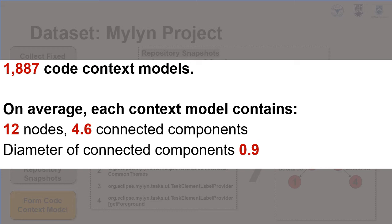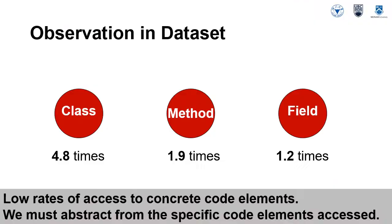Our final dataset of code context models consists of 1,887 models. The size of code context models varies, with an average of just over 12 nodes. The code context models are typically comprised of multiple connected components, with an average of 4.6, indicating that developers work with multiple clusters of structurally connected code elements during a working period. The average diameter of connected components is 0.9, indicating that developers did not navigate code elements by following structural dependencies in depth during a working period.